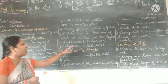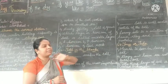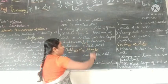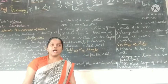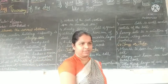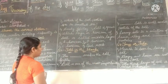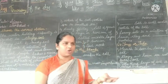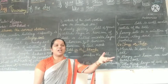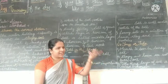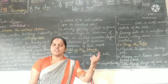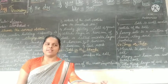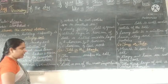Which layer of the soil horizon is called the middle layer? It is the B horizon. And the A horizon is called the top layer. The last layer is called bedrock, the second last layer is the C horizon, and the first layer is the A horizon.